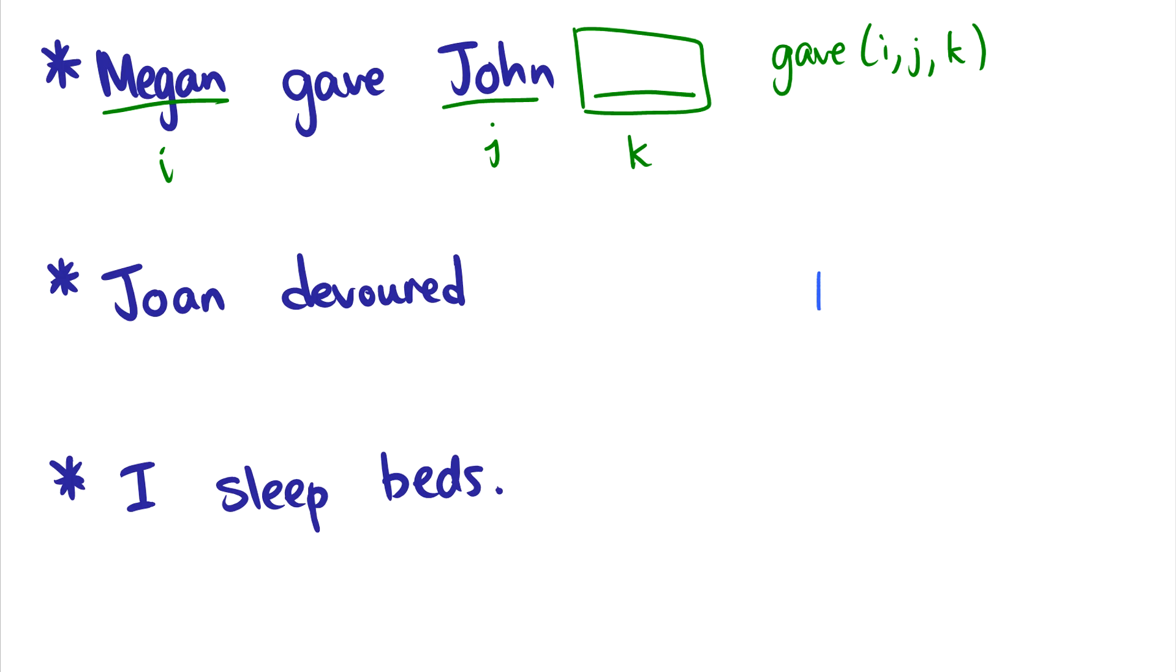What about Joan devoured? Well, devoured is a transitive verb. We'd write this as devoured i-j, where it takes two arguments. It takes someone who devours something. So Joan is our agent, the devourer. But it's missing the theme of the sentence. It needs a theme. The verb devour needs a theme, which is our j that we're missing. So we should have a theme here.